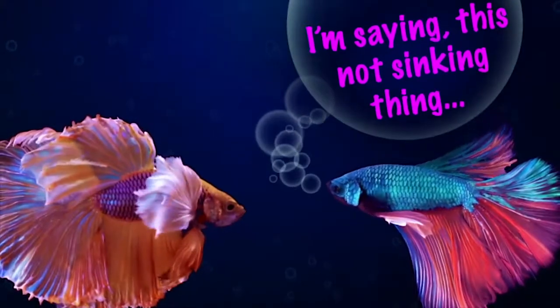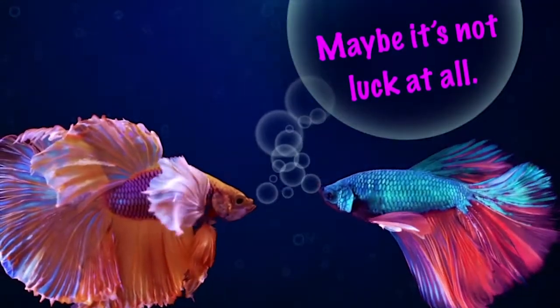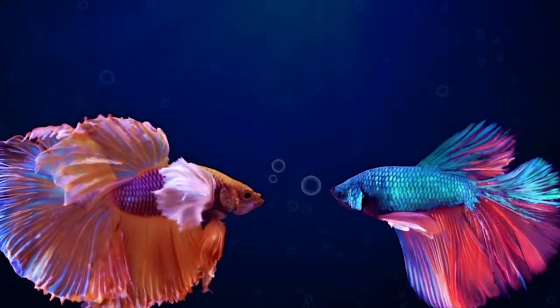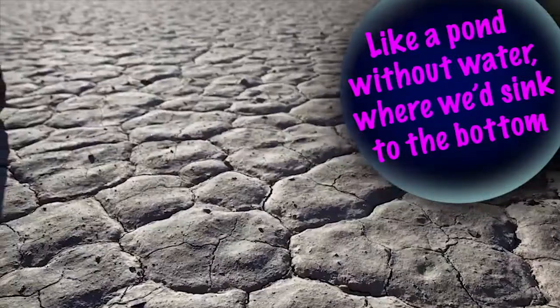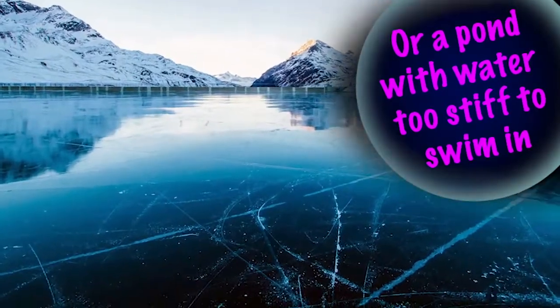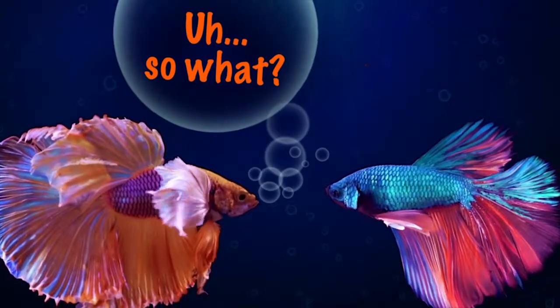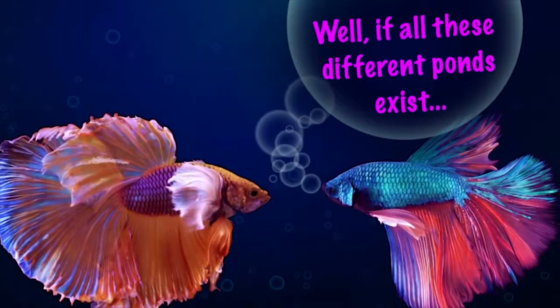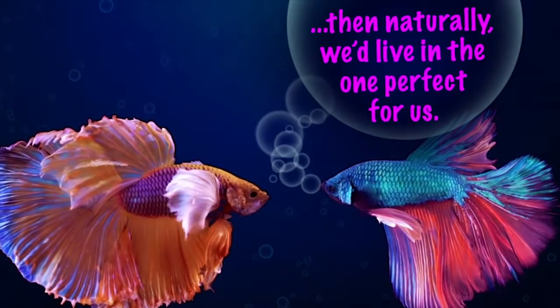I'm just saying, this not sinking thing. Maybe it's not luck at all. How's that? What if there are parallel ponds, like a pond without water where we sink to the bottom? Or a pond with water is too fit to swim in? So what? Well, if all these ponds exist, then naturally we live in the one perfect for us.